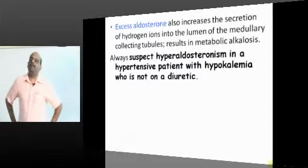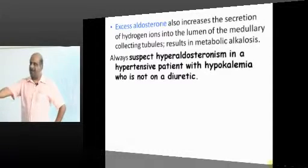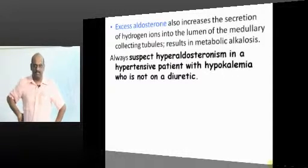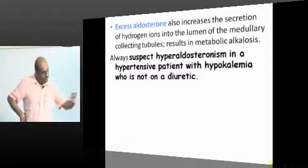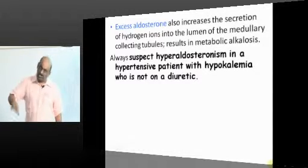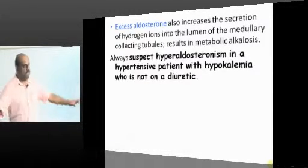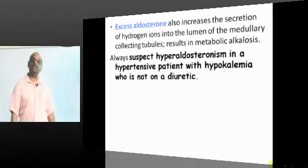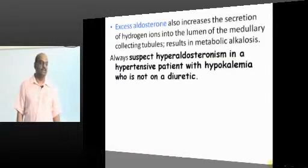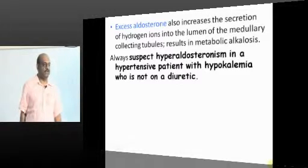When will you suspect primary hyperaldosteronism? A patient who has hypertension, who is found to have hypernatremia along with hypokalemia — when this combination is found, you suspect the possibility of Conn's syndrome.